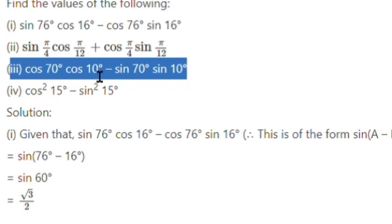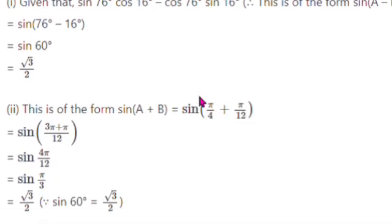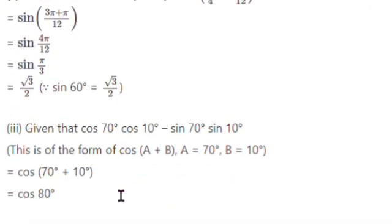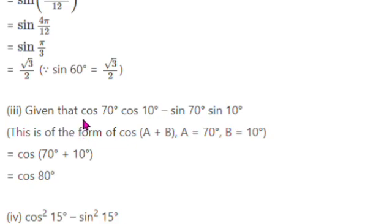This matches the form: cos A, cos B, minus sin A, sin B. What formula is going on? Cos A cos B minus sin A sin B — this is of the form cos of A plus B.